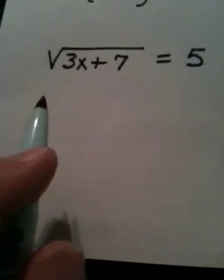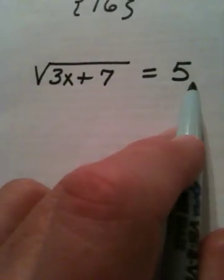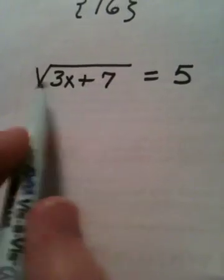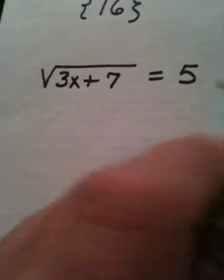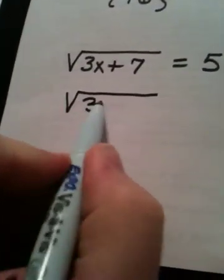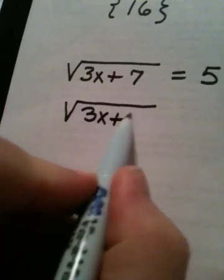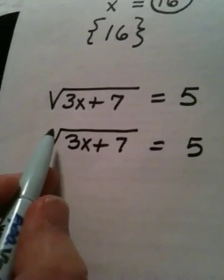I have a radical equation. The square root of 3x plus 7 equals 5. The radical is by itself, and this number is by itself.